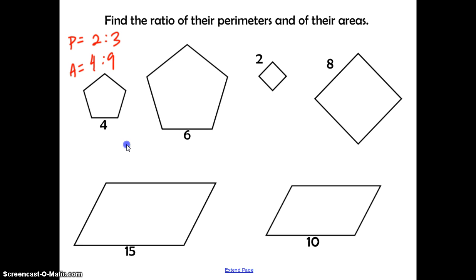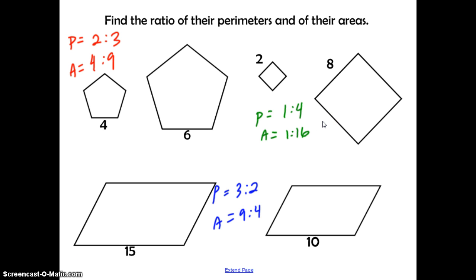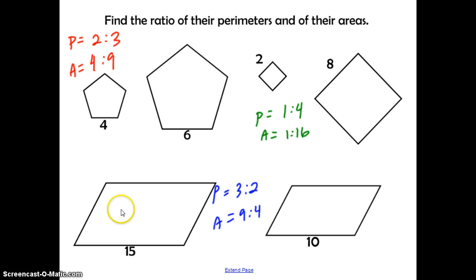Go ahead and pause, try the other two sets, and then check back. Hopefully you found that the ratio of the two squares' perimeters would be 1 to 4, and the area ratio would be 1 to 16. For the two parallelograms, the perimeter ratio should be 3 to 2, and the area ratio should be 9 to 4.